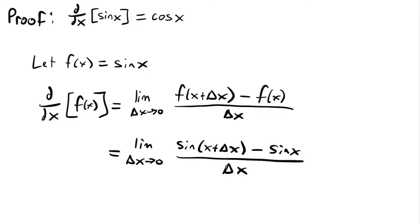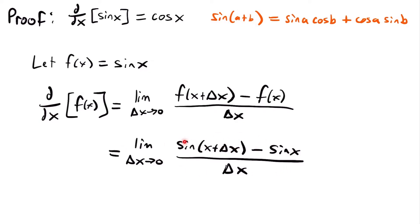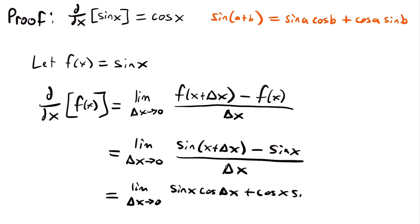Specifically, we need the addition identity for sine. The addition identity for sine states that sine of a plus b is equal to sine of a times cosine of b plus cosine of a times sine of b. In our scenario, where we have sine of x plus delta x, x would be a and delta x would be b. So we can rewrite the limit accordingly, just following this formula.